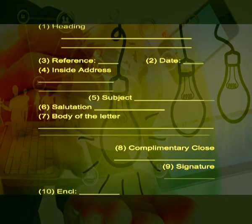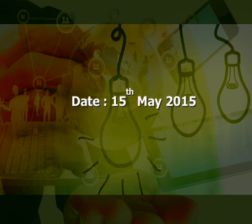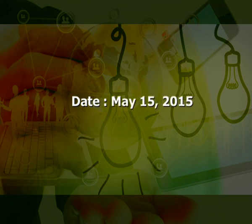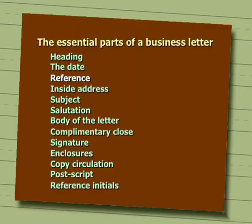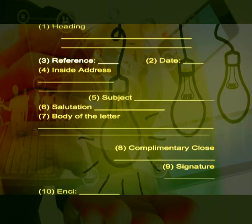The date. The date is usually written on the right hand side corner below the heading. It can be written as 15 May 2015 or May 15 2015. Abbreviations are avoided while writing the date. Reference number is given on the left corner after the heading. It is usually opposite to the date and in the same line.